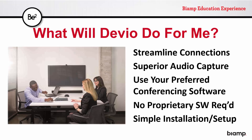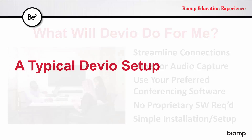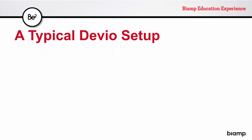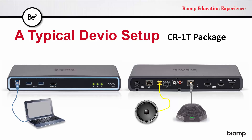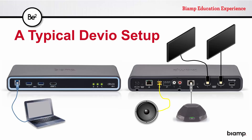There are no special skills necessary to get Devio set up. A standard Devio setup is the CR1T package, which includes the CR1 and the DTM-1 microphone. You provide the additional AV hardware of your choice — for instance, an external speaker — and connect your computer via a single USB connection. Power everything up, connect your computer to the internet, and you're all set up for audio conferencing. Add up to two video monitors and a USB camera, and that's all that's required to support a web-based video conference.